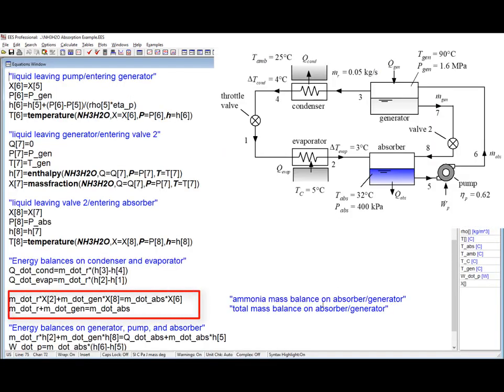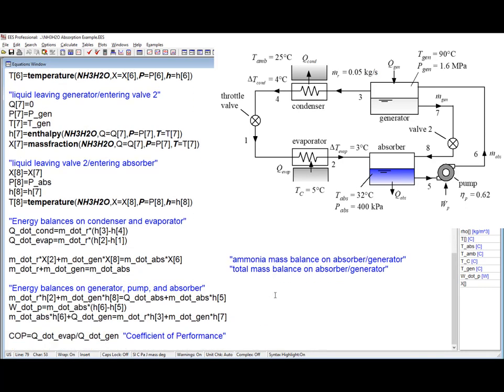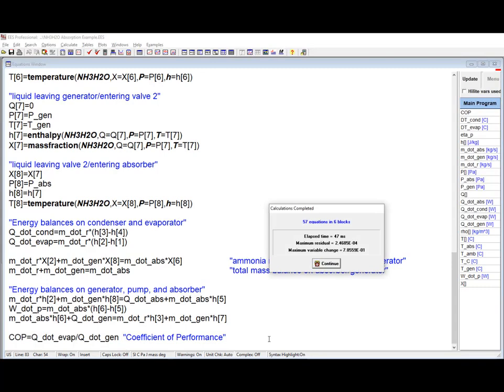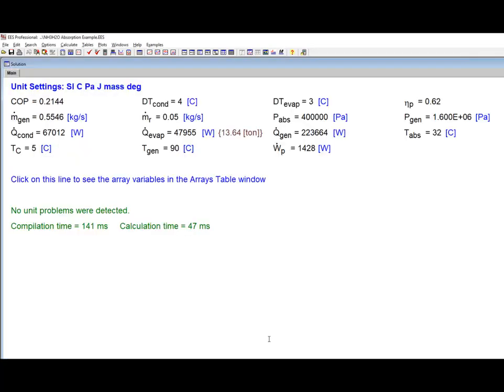An ammonia mass balance on the absorber and a total mass balance on the absorber together will allow you to solve for the mass flow rates that must be pulled from the absorber and also pulled from the generator. And then finally energy balances on the absorber, pump, and the generator allow us to calculate the remaining energy flows. So the coefficient of performance or COP of this cycle defined in terms of the refrigeration effect divided by the thermal input to the generator can be computed. And the COP under these conditions is only about 0.21. So there is various modifications to the cycle that can be implemented in order to improve this value somewhat.